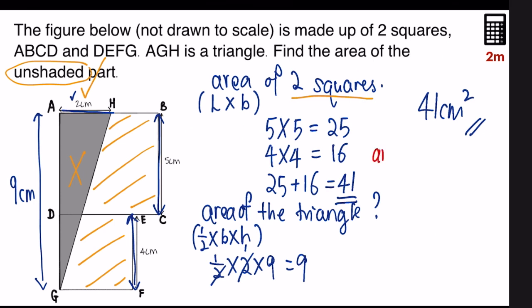So to find the area of the unshaded part, we will take the area of the two squares, which is forty-one, subtract the triangle, which is nine, and we will get thirty-two. Thirty-two is the answer. Thirty-two square centimeters.